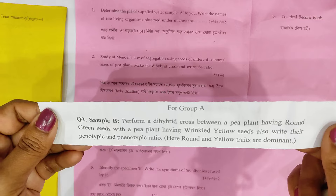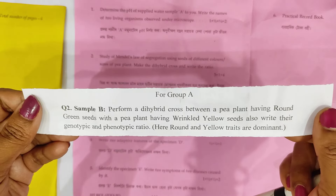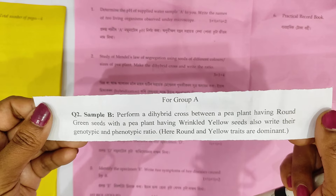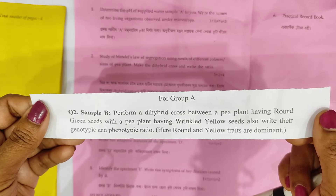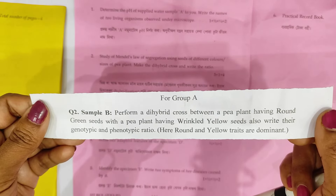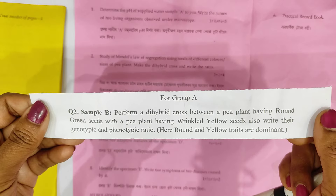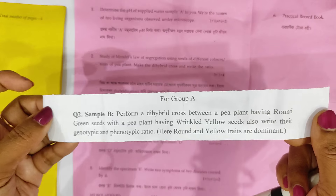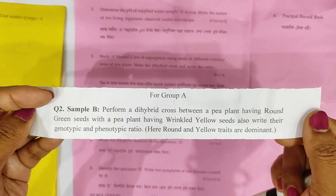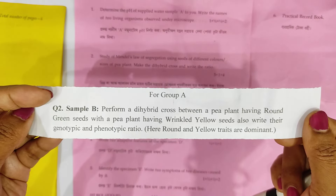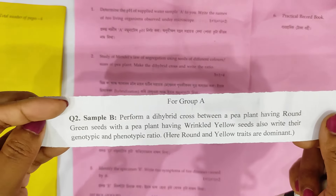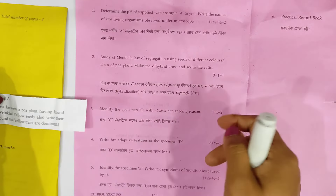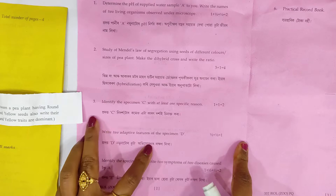Perform a dihybrid cross between a pea plant having a round green seed with a pea plant having a wrinkled yellow seed. Also write the genotypic and phenotypic ratio. Note that round and yellow traits are dominant. This is how to set up the dihybrid cross.